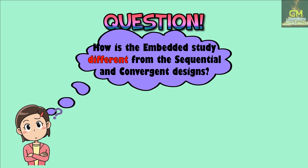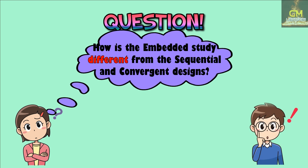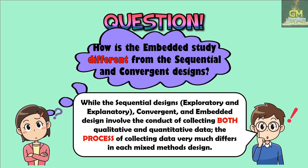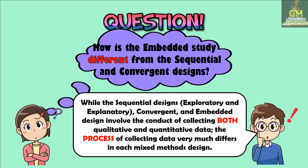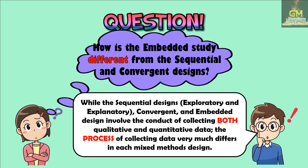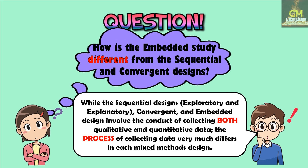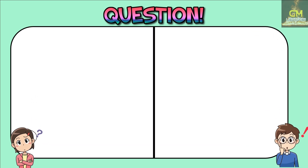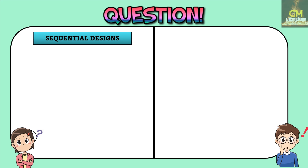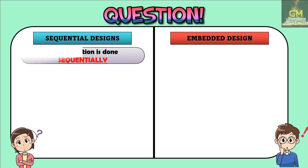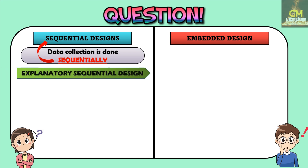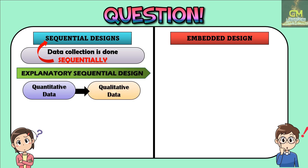How is the Embedded Study different from the Sequential and Convergent Designs? We have to take note that while the sequential designs — particularly the exploratory and explanatory designs — the convergent design, and the embedded design all involve collecting both qualitative and quantitative data, the process of collecting data very much differs in each mixed methods design. In a sequential design, the data collection is done sequentially. For example, in an explanatory sequential design, the quantitative data is collected first, followed by the collection of the qualitative data.